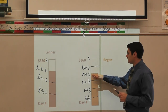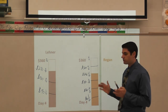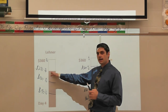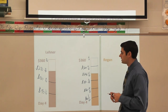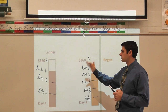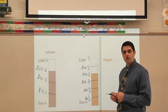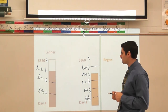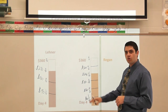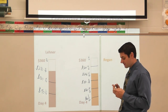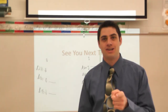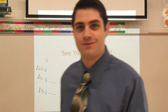Mrs. Regan's class has raised four-sixths, or two-thirds, of the goal, which is two hundred forty dollars after day four. Mr. Laner's class has raised three-fourths, which is two hundred seventy dollars. So at this point in the fundraiser, Mr. Laner's class has achieved more of their goal than Mrs. Regan's class. We'll have to wait and find out if Mrs. Regan's class surpasses us in the end. Thank you for tuning in to Mr. Laner's Math Extravaganza — we'll see you next time!